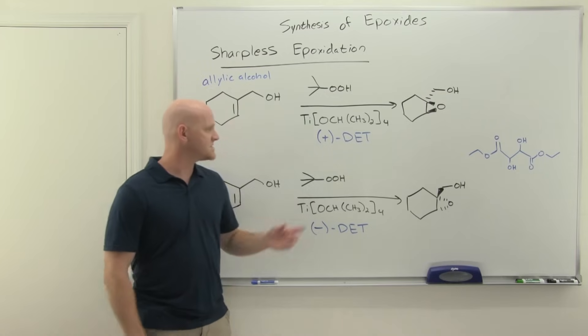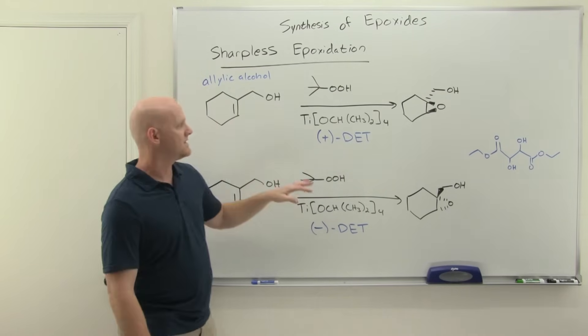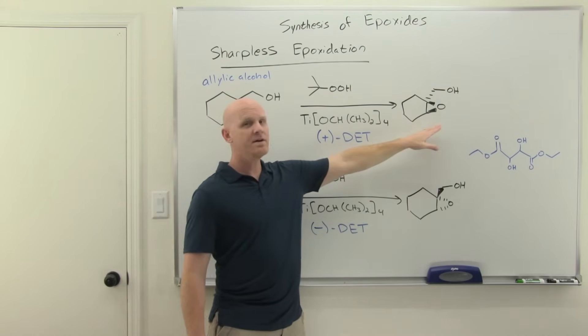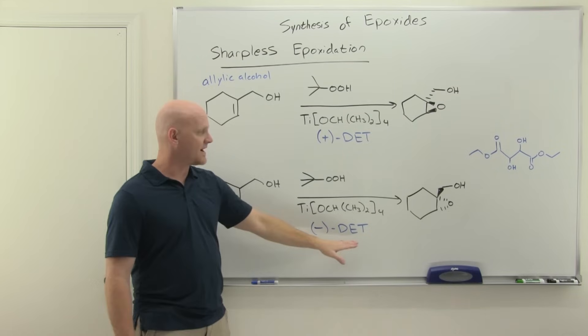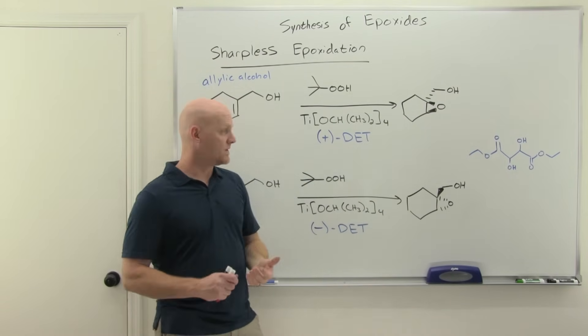But rather than looking at those configurations, we just look at the plus versus the minus, kind of which way it rotates light. So it turns out if you use plus diethyl tartrate, you only get one of the enantiomers. And if you use minus diethyl tartrate, you only get the other enantiomer. Now, here's the pain in the butt with this, though.